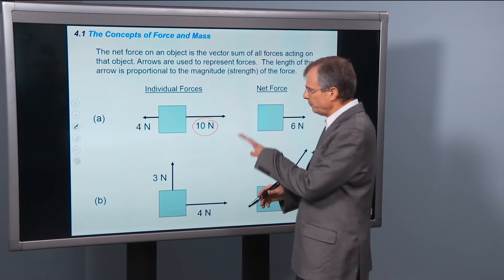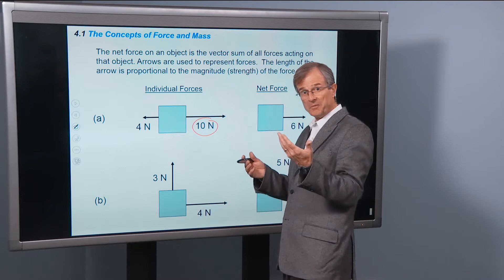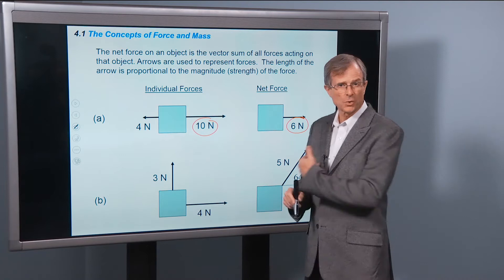So what's the net force then? Well, if you push to the left with a force of 4N and push to the right with a force of 10N, then the net force is just going to be 6N, the difference between the two. And it's going to be in the direction of the stronger of the two forces. No big deal.